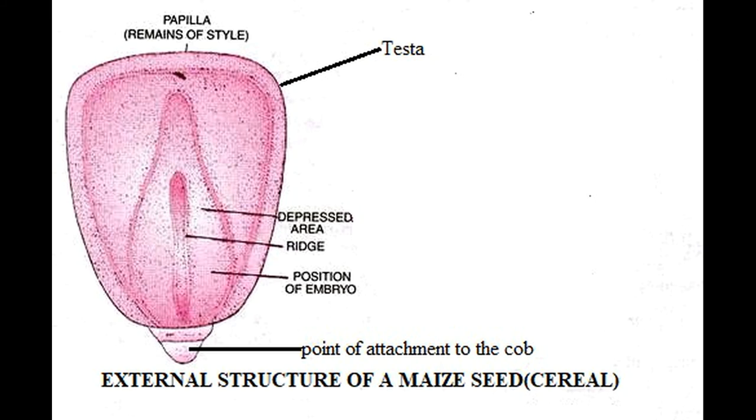Near the broader end, the upper flat surface contains a small papilla which represents the remains of the style. The same side possesses a depressed whitish area, a central ridge which indicates the position of the underlying embryo axis. In the seed of cereal such as maize, the seed coat is membranous and generally fused with the fruit wall, called hull. It protects the contents of the seed.